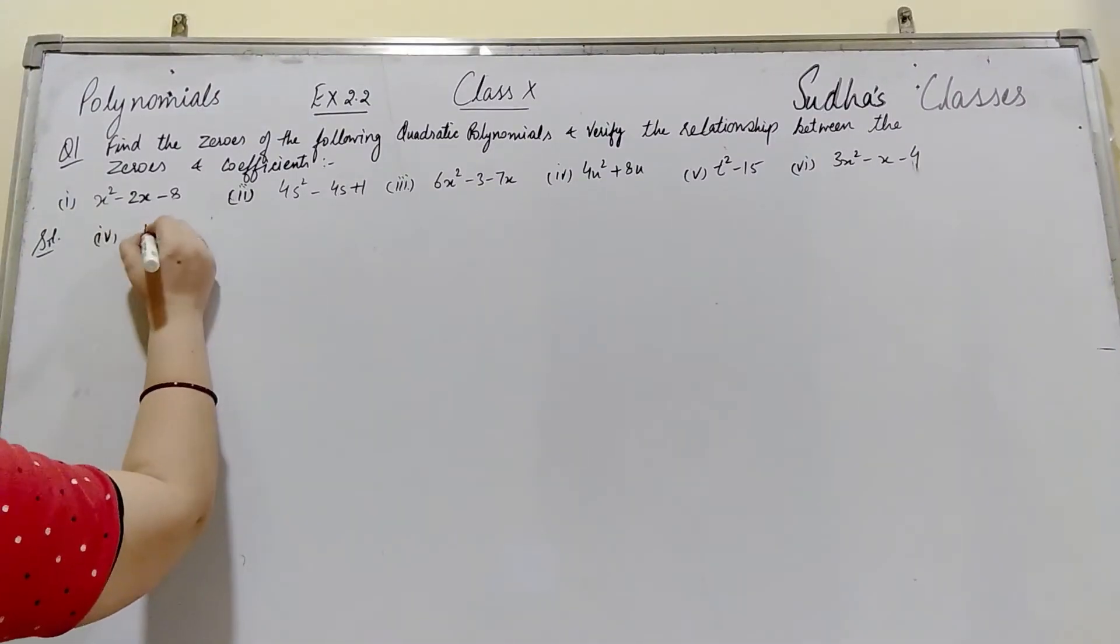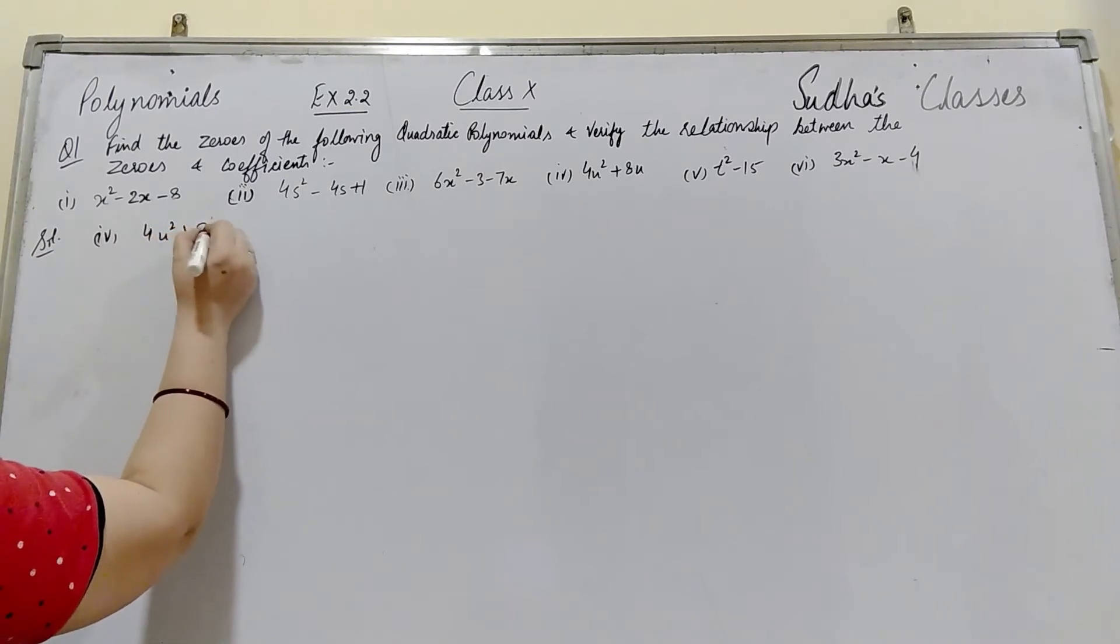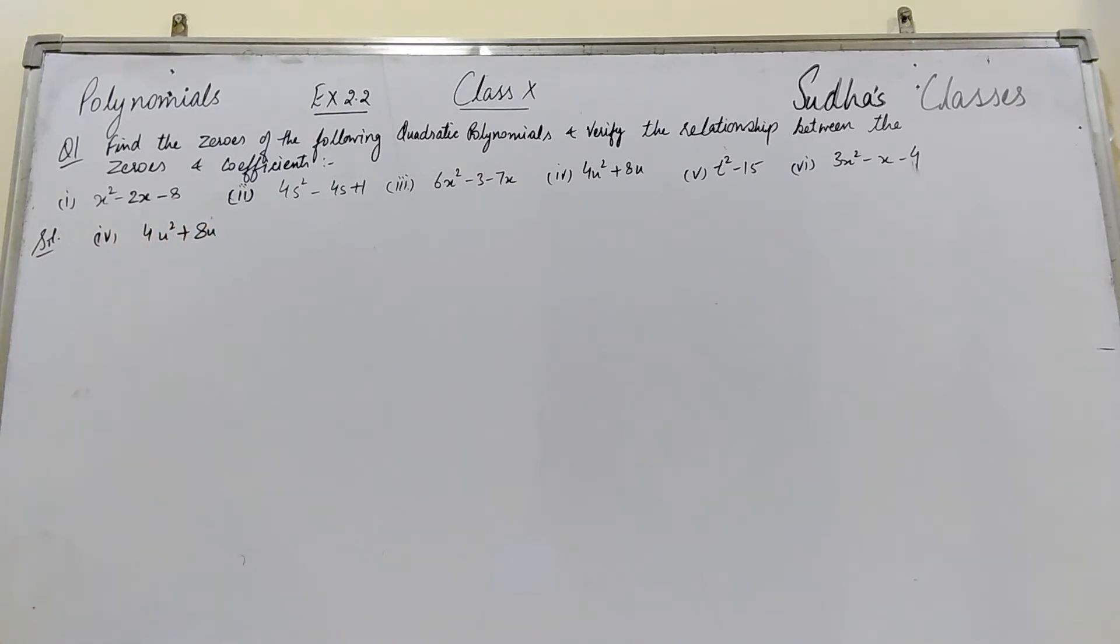Part 4 is 4u² + 8u. Now we will find these zeros. Taking common factors: 4u(u + 2). This means the factors are 4u and u + 2.